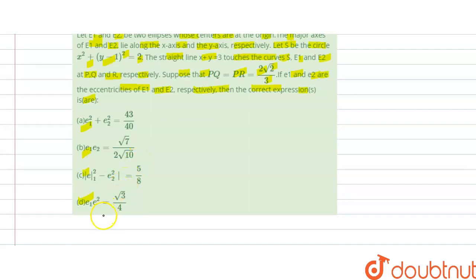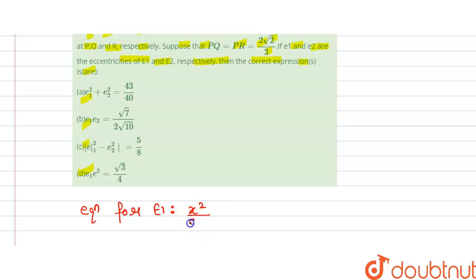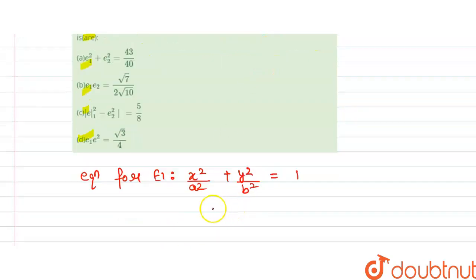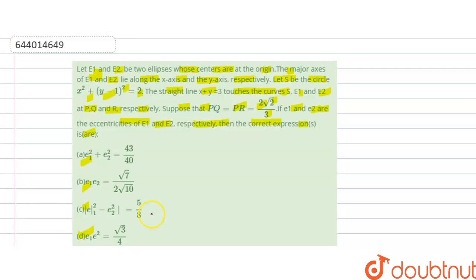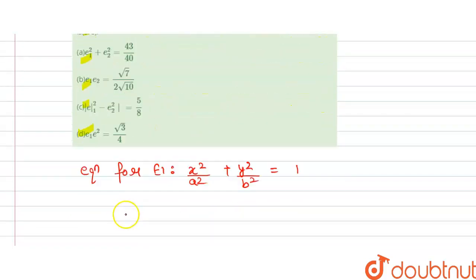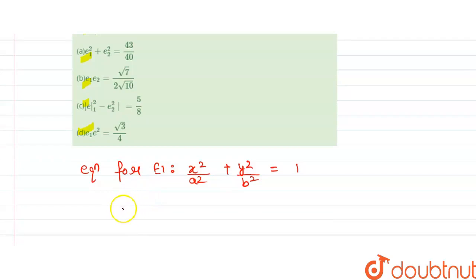So, for the given point of contact of E1, we have the equation for E1: x²/a² + y²/b² = 1. We have the given points (2, 2) and (2, 3). From here we can write A² and B², and we also have the points (1, 3). So we get A²/3 and B²/3. These are the point of contact coordinates for E1.